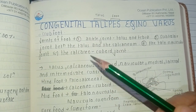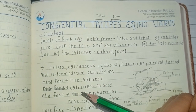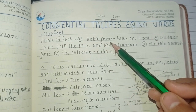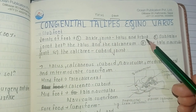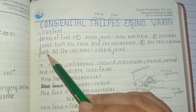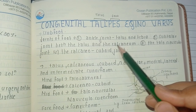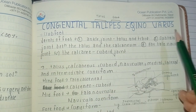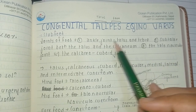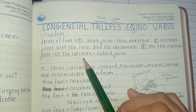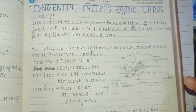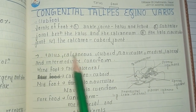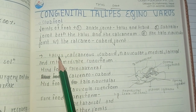The joints present in the foot are: the ankle joint, formed by the talus and the tibia; the subtalar joint, formed between the talus and the calcaneum; the talonavicular joint, formed between the talus and the navicular bone; and the calcaneocuboid joint.